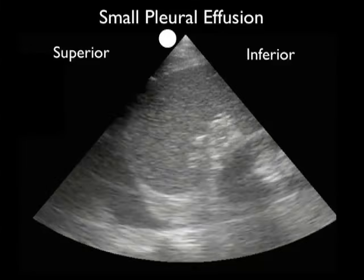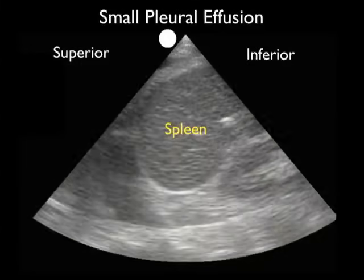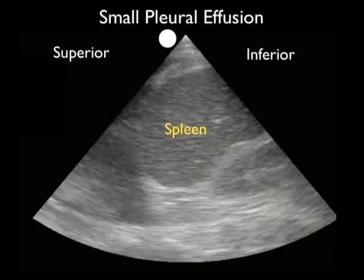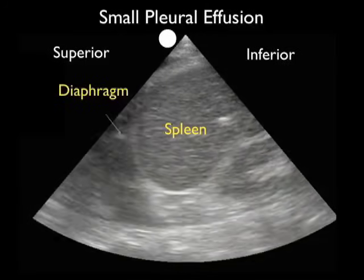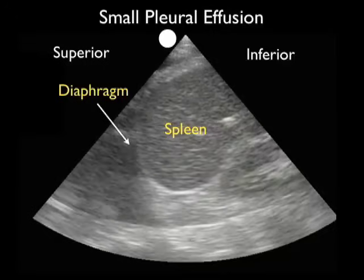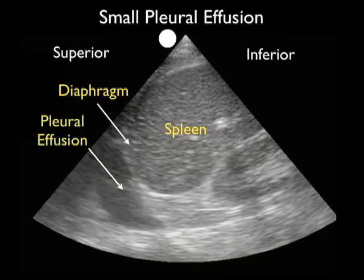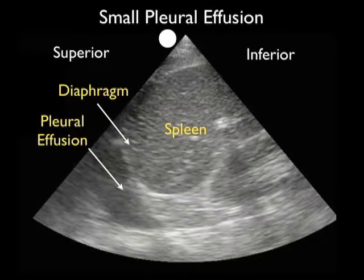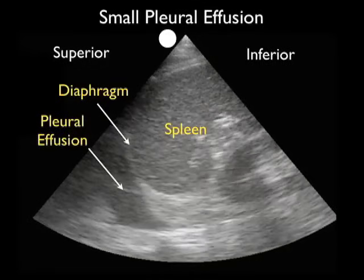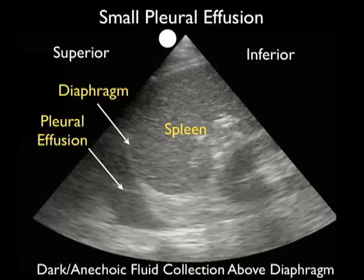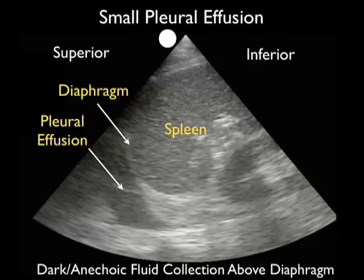Here's a video clip showing a small pleural effusion as taken from the left upper quadrant view. We see the spleen in the middle of the image, the kidney inferior to the spleen, and the diaphragm — the curving white line moving up and down as the patient breathes — right above the spleen. As we look into that area above the diaphragm, we appreciate the presence of a dark or anechoic fluid collection above the diaphragm. This represents a positive pleural effusion. Notice the amount of fluid is relatively small, and we can actually see the lung moving up and down to the left of the image.